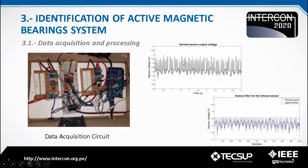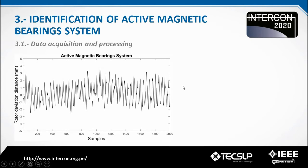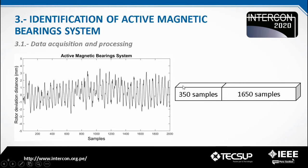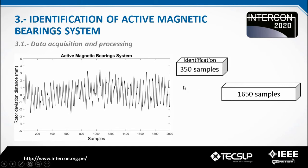The data acquired by the position sensor shows considerable noise, so a Kalman filter was used to eliminate the noise from the data. The image shows the data acquired by the position sensor after filtering, which is ready to use for identification. In the case of the current sensors, no filters were used because they did not present considerable noise. The data acquisition was carried out for 10 seconds, yielding 2,000 samples, of which 350 samples were used for system identification and the rest for validation.